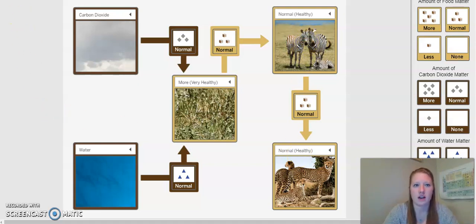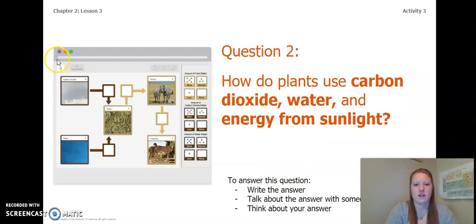So now that we talked about how matter and energy flow through an ecosystem, let's answer this question. How do plants use carbon dioxide, water, and energy from sunlight?